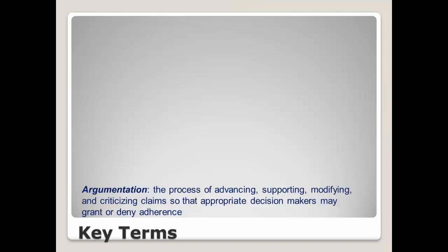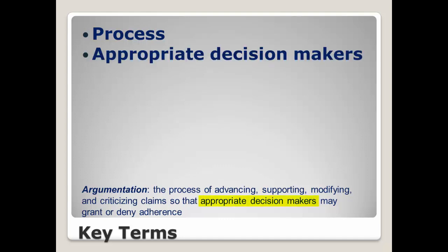Let's get back to that definition of argumentation as the process of advancing, supporting, modifying, and criticizing claims so that appropriate decision-makers may grant or deny adherence. A process is a series of actions or steps that you take to achieve a particular end — in this case, the decision you want the decision-makers to make. Appropriate decision-makers are those who will make or impact the final decision. Before you engage in argumentation, you should determine who the appropriate decision-makers are, and that may not be obvious. Why waste your time building a case for someone who can neither grant nor deny adherence?